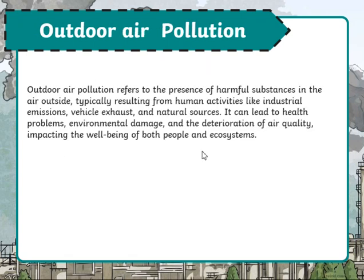Moving to another concept: outdoor air pollution. Outdoor air pollution refers to the presence of harmful substances in the air outside, typically resulting from human activities like industrial emissions, vehicle exhaust, and natural sources. It can lead to health problems and environmental damage, causing the deterioration of air quality and impacting the well-being of both people and ecosystems.